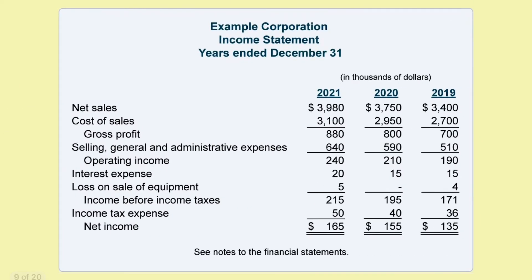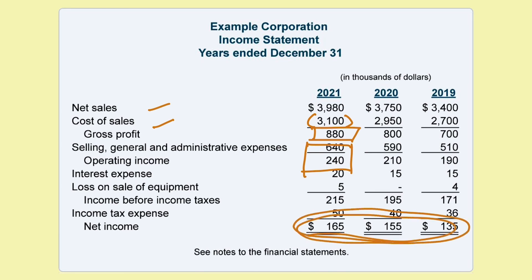This is an example of an income statement. As you can see here, it lists the net sales, the cost of sales — which is subtracted — which in turn shows you the gross profit, and all the other expenses or losses. In the end, it shows the net income. It's positive, which means that for those years the company had a profit. As you can see here, it shows the performance of the company if they either made a profit or loss during the year.